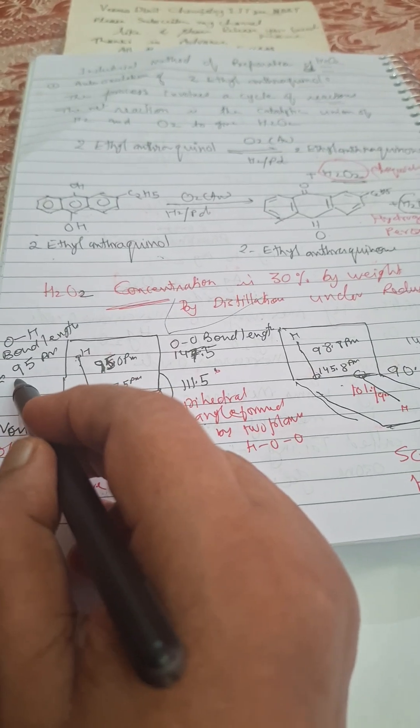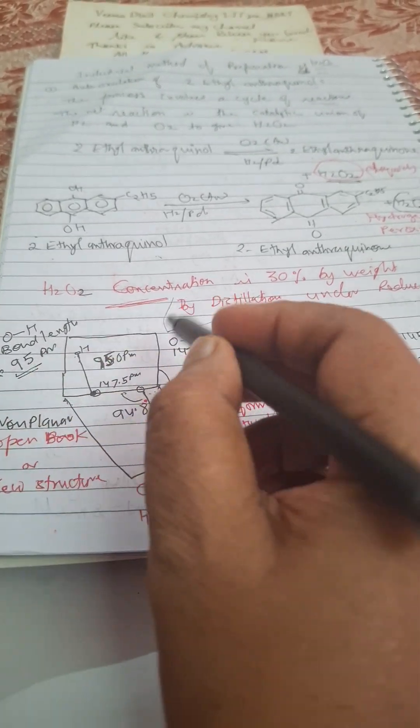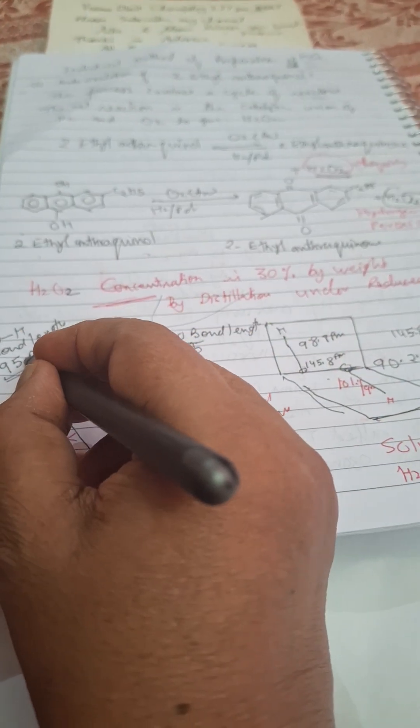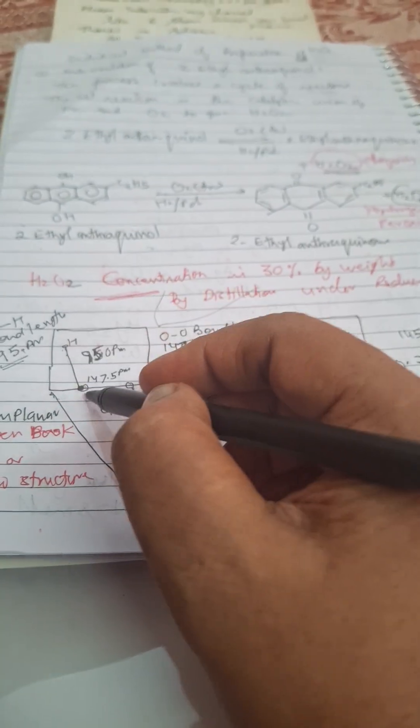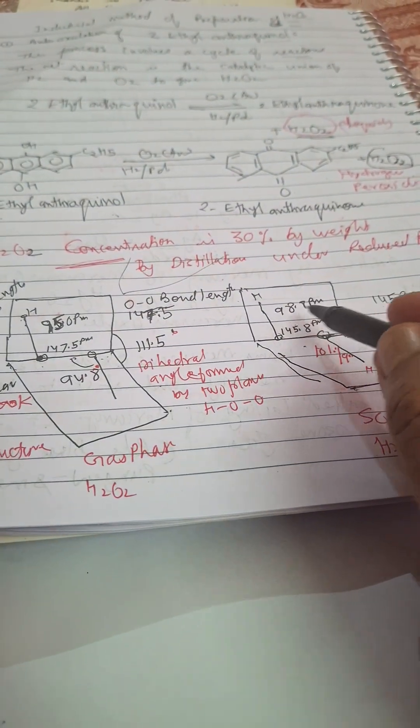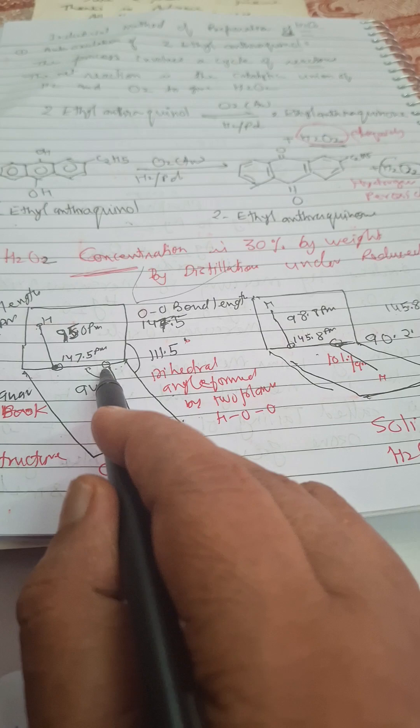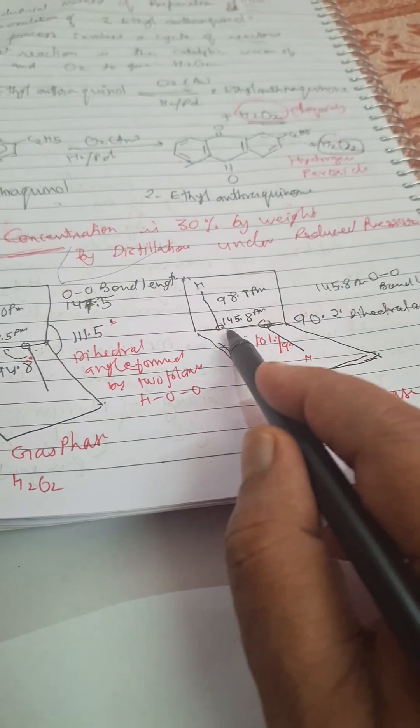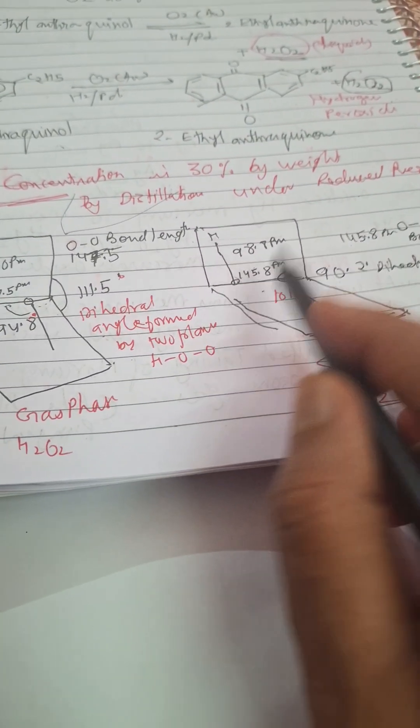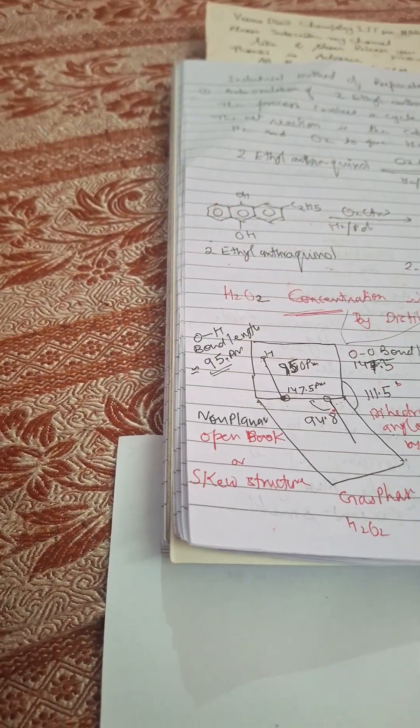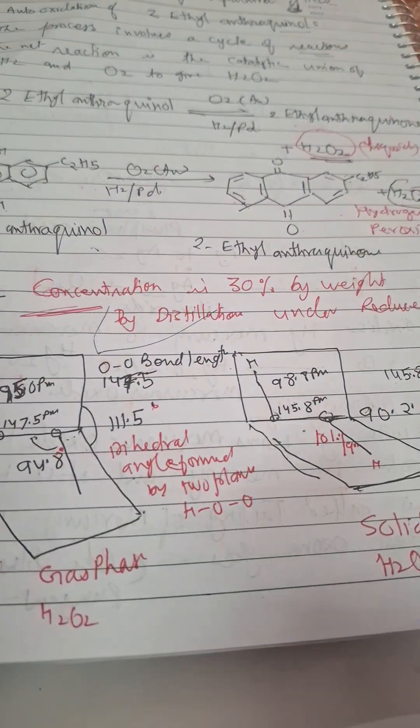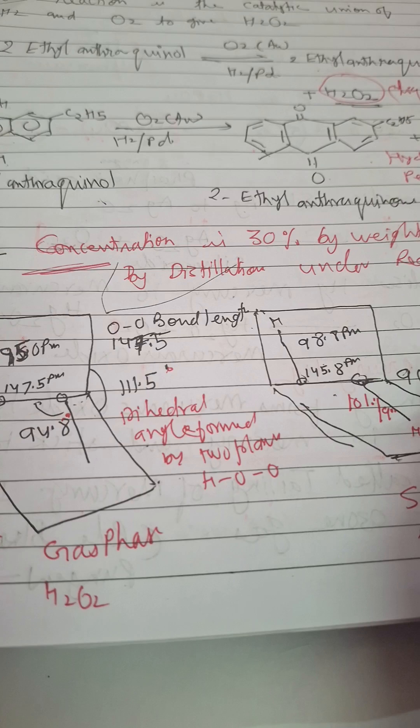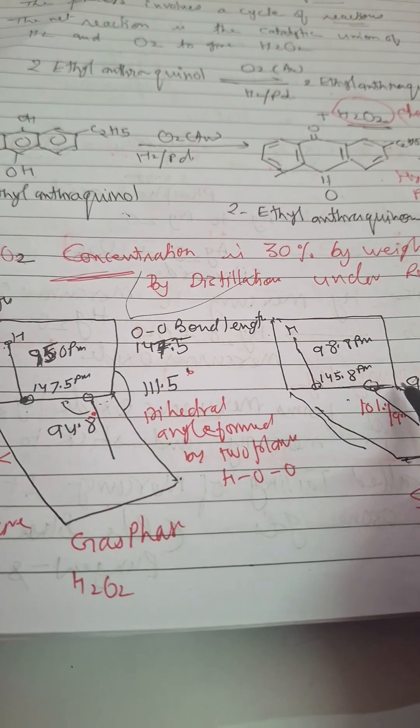OH bond length here 95.0, here 98.8 picometer. Bond length between O-O is 147.5 in gas phase, bond length between O-O is 145.8 in solid phase.